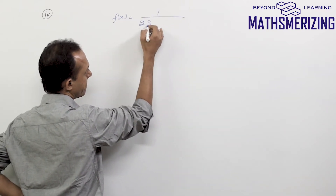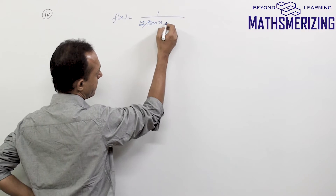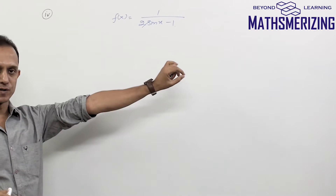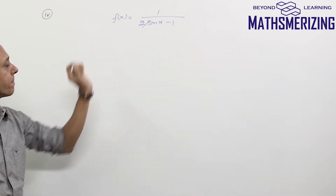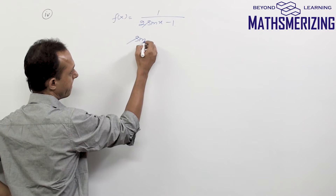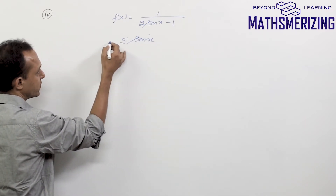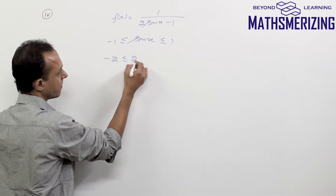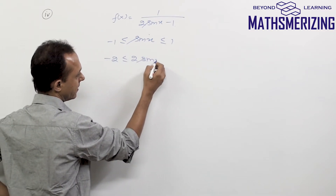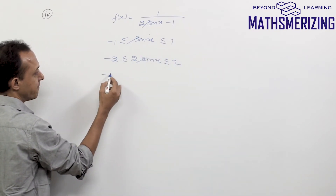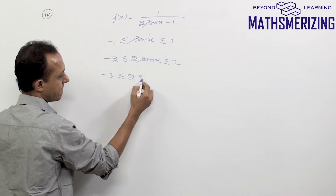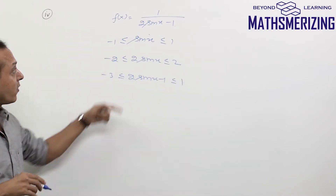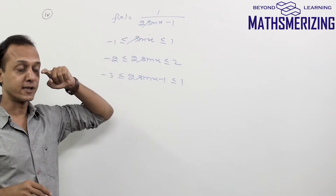I'll take f(x) = 1/(2sin(x) - 1) and find the range of this function. Since sin(x) is bounded, the value of sin(x) lies between -1 and +1. Multiplying by 2 gives -2 ≤ 2sin(x) ≤ 2, and subtracting 1 gives -3 ≤ 2sin(x) - 1 ≤ 1. Now I need to take the reciprocal of 2sin(x) - 1.